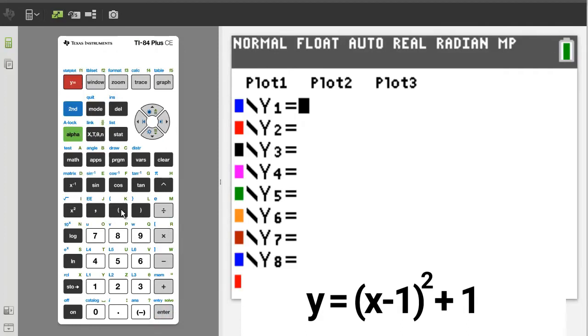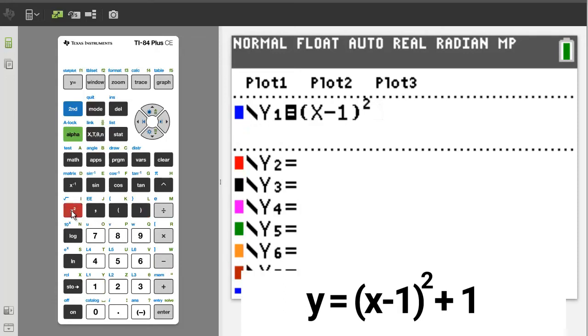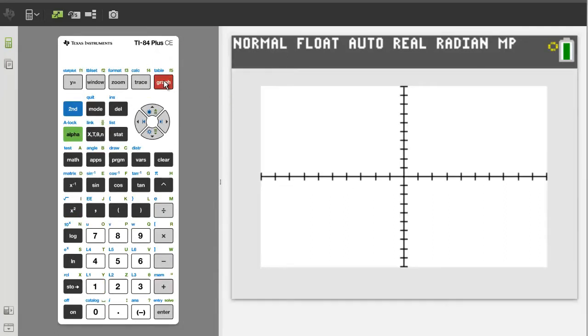Open parenthesis, the x is located here, minus 1, close parenthesis, the square button is here, plus 1. Now press the graph button. There is the parabola.